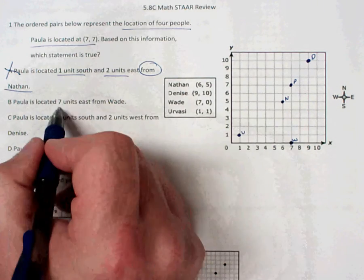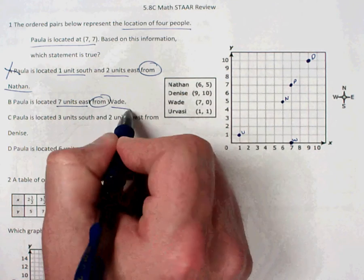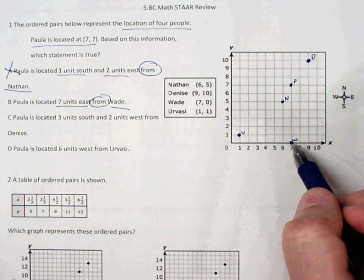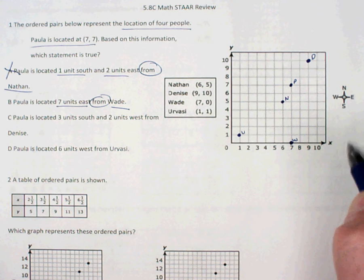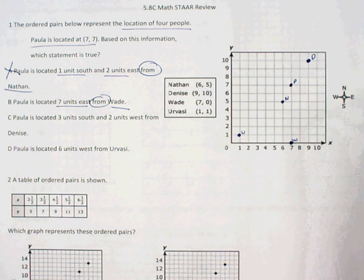Paula is located 7 units east from Wade. Alright, so I need to start at Wade. And if I go east 7 units, 1, 2, 3, 4, I'm going to end off the grid completely. So that's not going to work.